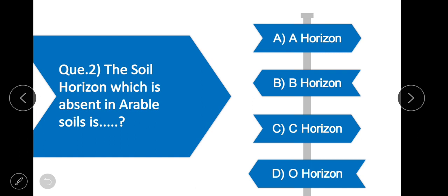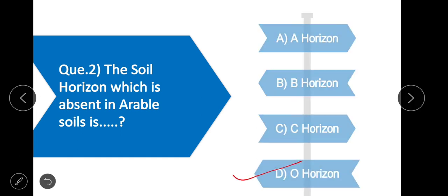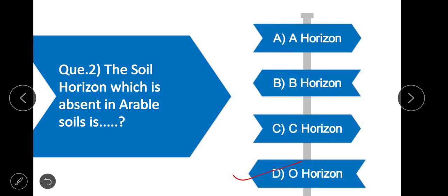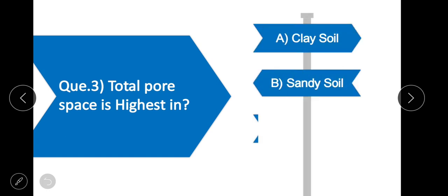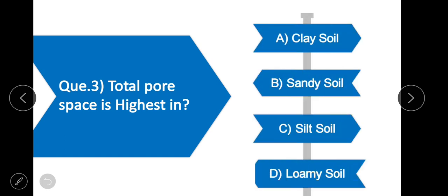The horizon absent in an Entisol is Horizon O. Question 3: Total pore space is highest in — option A is correct — clay soil. Total pore space is highest in clay soil.